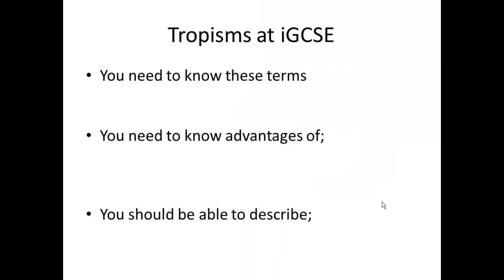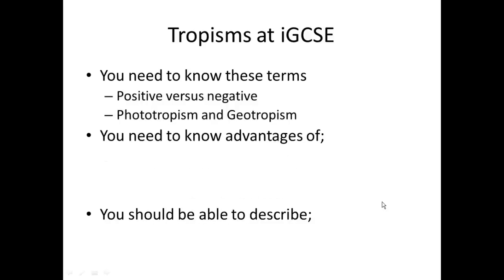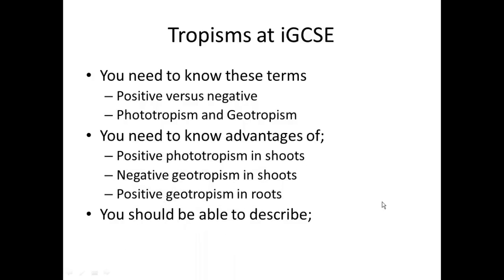Let's go back to our learning outcomes. You need to know the terms positive versus negative, phototropism, and geotropism — can you discuss those? You need to know the advantages of positive phototropism in shoots, negative geotropisms in shoots, and positive geotropisms in roots — can you describe them from this video? And you should be able to describe how auxin causes a positive phototropism. Have a crack at those, and I hope that helps.